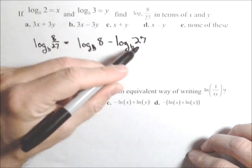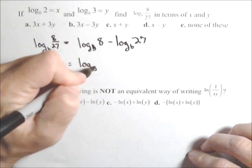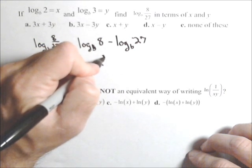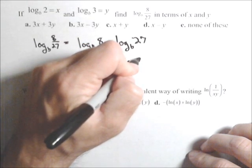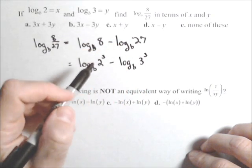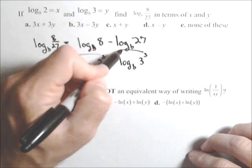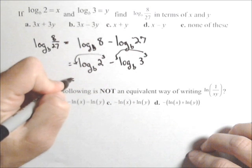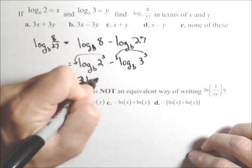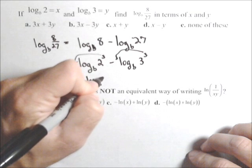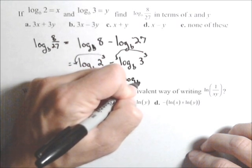The next is, both of these can be rewritten as powers. Log base b, I'm gonna write eight as two cubed and I'm gonna write 27 as three cubed. Properties of logs allow me to pull these exponents out front. So I'm gonna have three log base b of two minus three log base b of three.